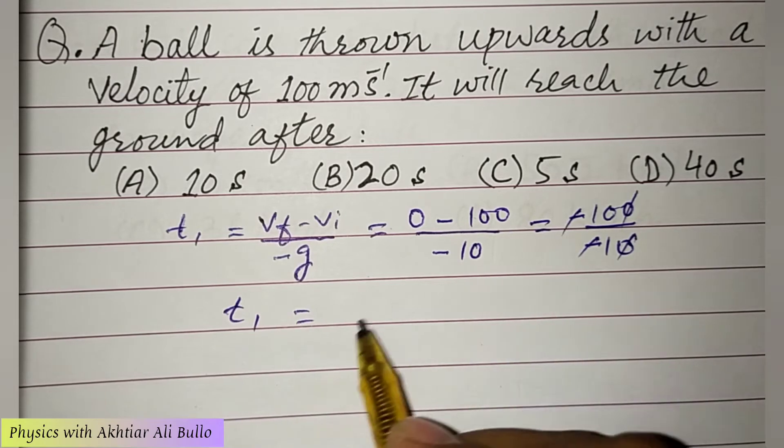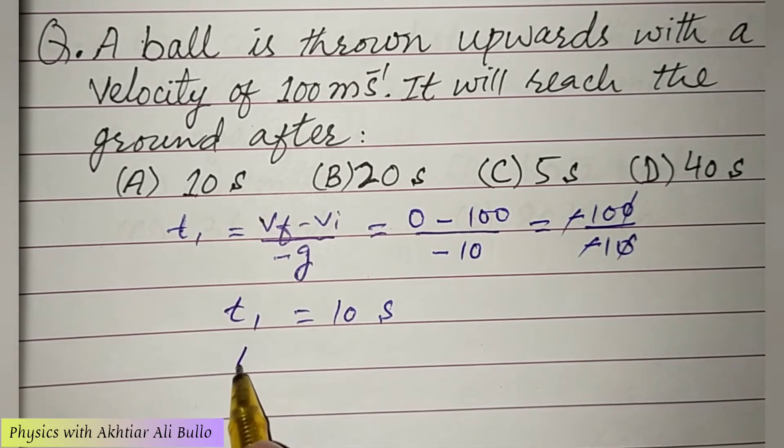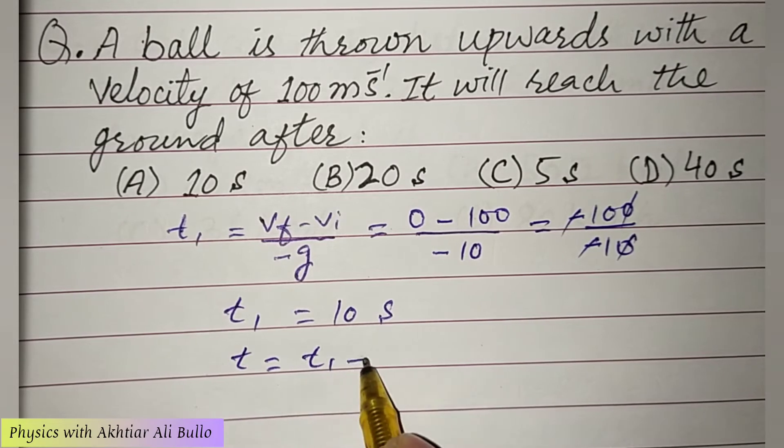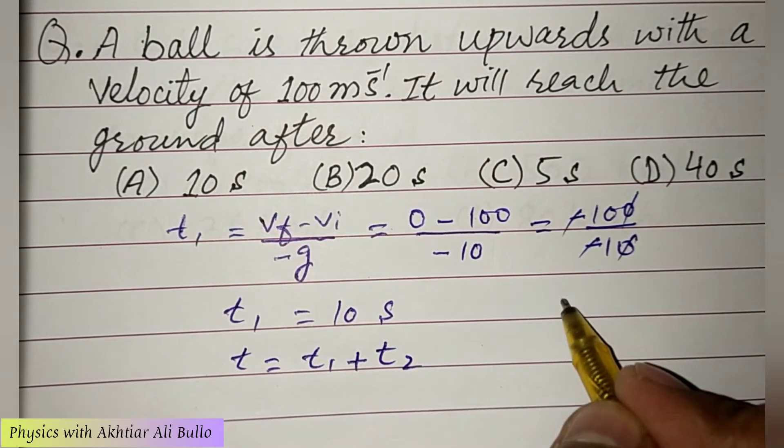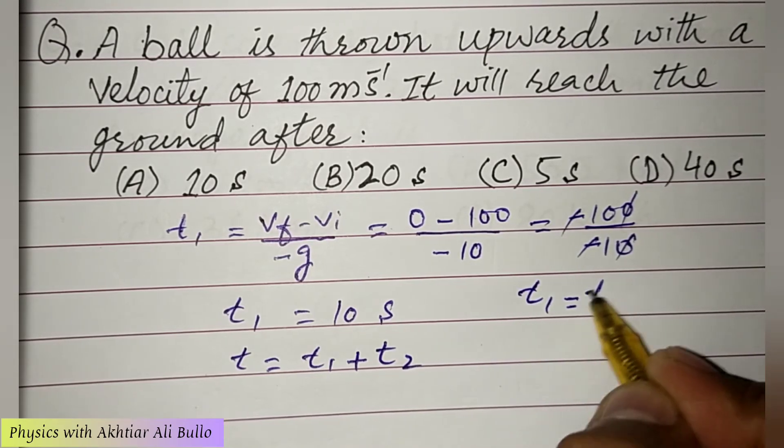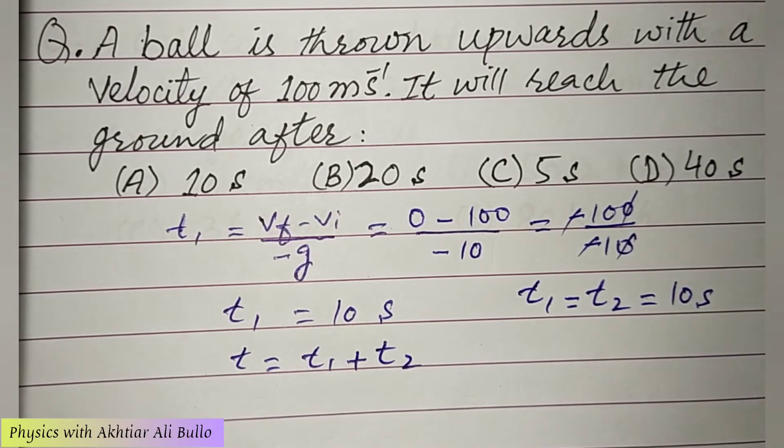We have to calculate total time of flight. Total time of flight t is equal to t1 plus t2. Here t1 is equal to t2 is equal to 10 seconds.